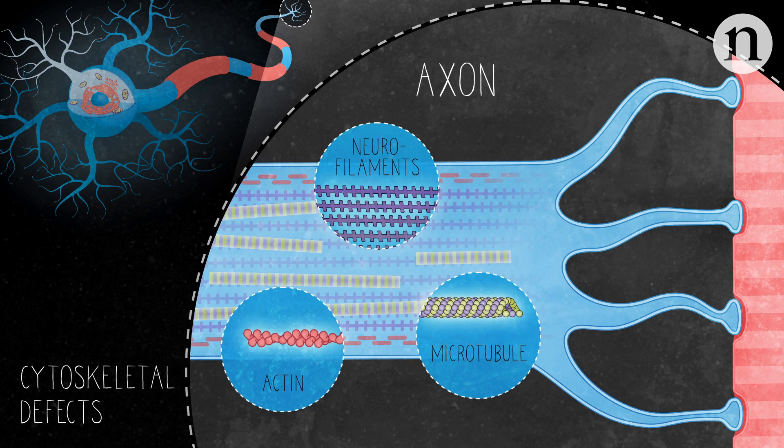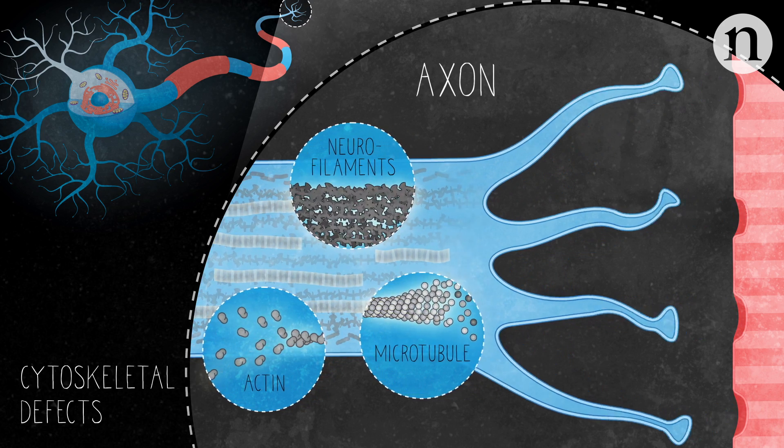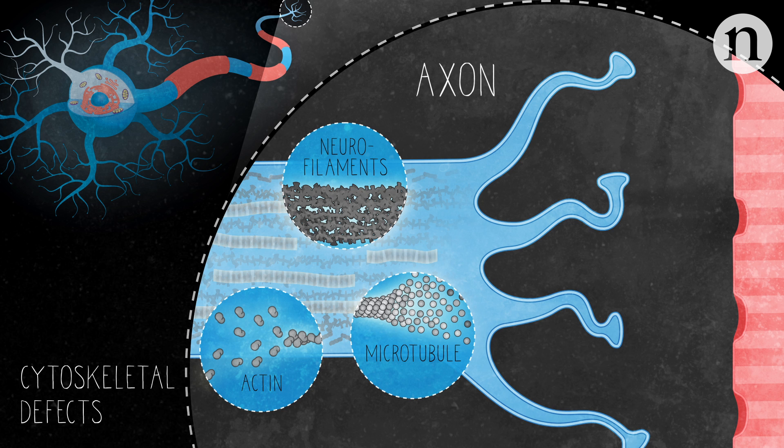Damage to the cytoskeleton can also cause the axon to retract. If this happens, the axon can no longer connect to the muscle nearby and can no longer signal the muscle to contract.